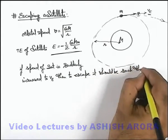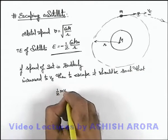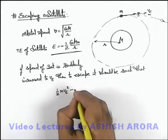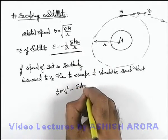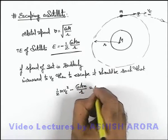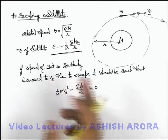If we calculate the total energy of satellite, it'll be half m v_e squared minus the potential energy, which is double of total energy, is GMm by r. This should be equal to zero. Then only we can say that with this speed v_e it'll escape.